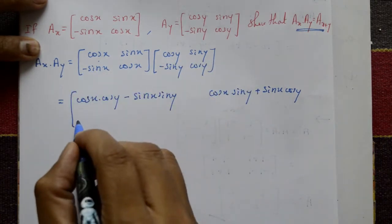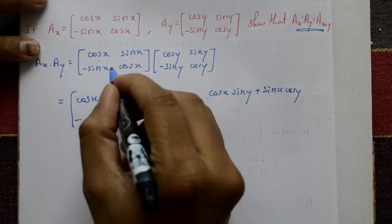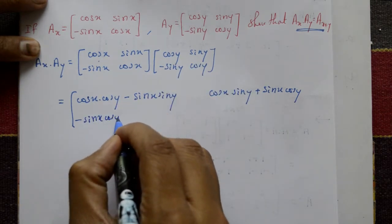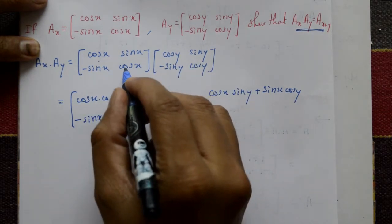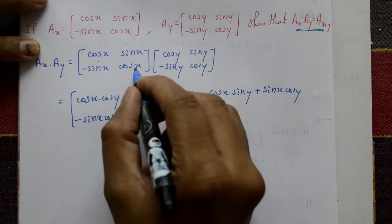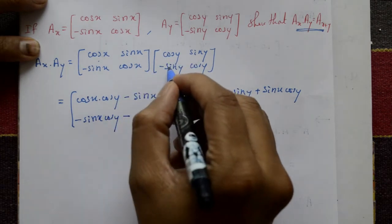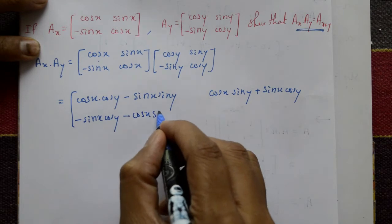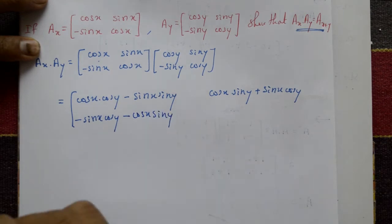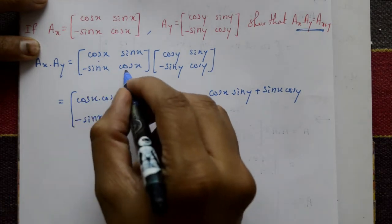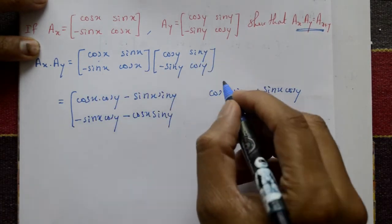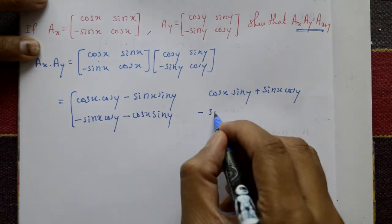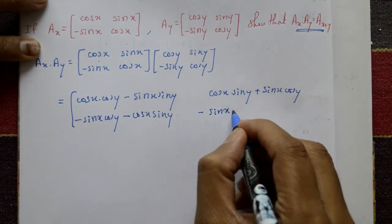Now for the second row: the minus sign is there, so minus sin x into cos y for the first column. Then again there is a minus sign after multiplication, giving minus cos x into cos y for the second position.